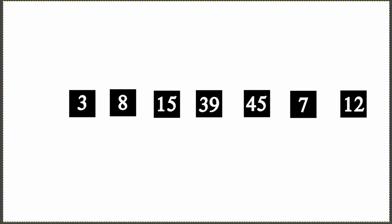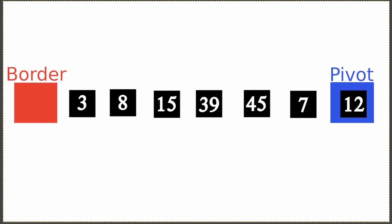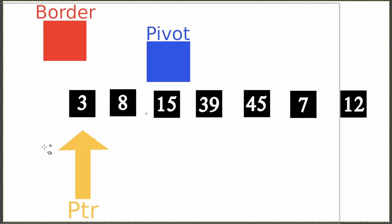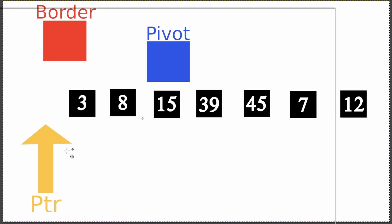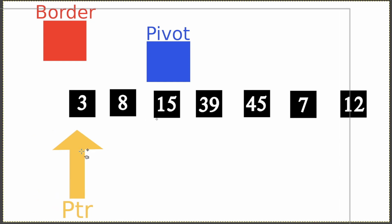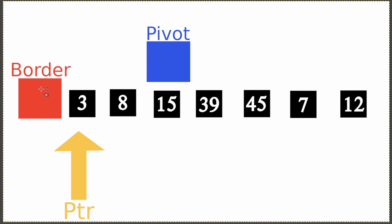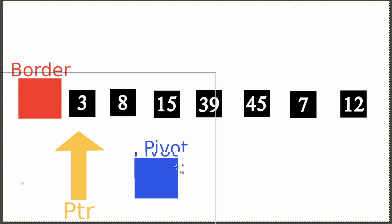Let's start by introducing a simple quicksort example with just a simple list and no code at all. The first thing we want to do is get to know a couple of words we're going to use throughout the tutorial: the pivot point, the border, and our current pointer. The current pointer points to the current element we're going to compare, and the pivot point is just a value we compare the current value to.